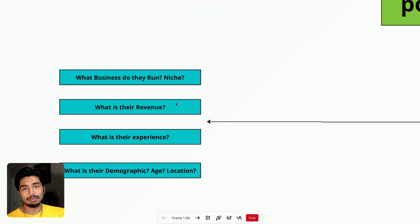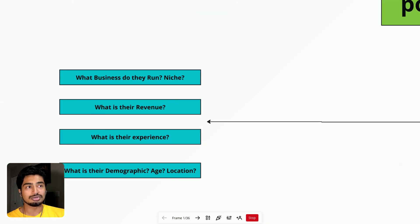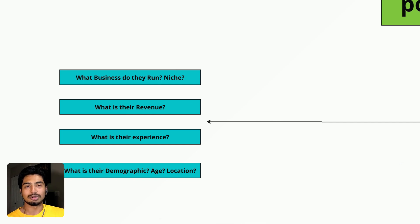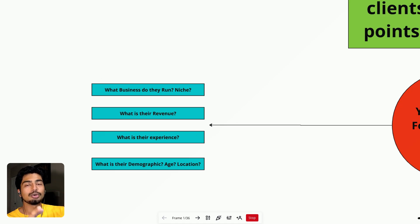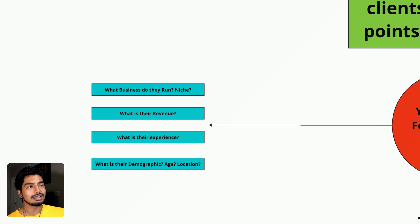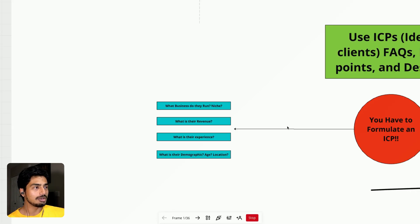Some questions you could ask yourself to formulate your ICP: What business do they run? What niche are they in? What is their revenue? What is their experience? What is their demographic — like their age, their location, et cetera. You have to know these details about your ICP. The more targeted and detailed your idea of who your ICP is, the easier it will be to use this system to create content ideas that attract that ICP.